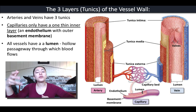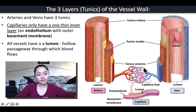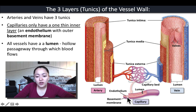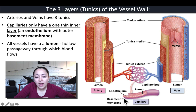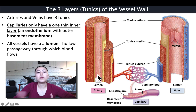Now let's look at the three layers or tunics that form blood vessel walls. Arteries and veins have three tunics: the innermost is called the tunica intima, then the tunica media, and the most external is the tunica externa. Capillaries, on the other hand, only have one thin inner layer consisting of the endothelium, surrounded by a connective tissue layer called the basement membrane. All blood vessels have a lumen — the passageway or space within the blood vessel where the blood flows.